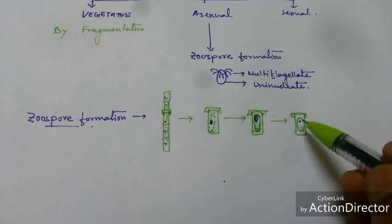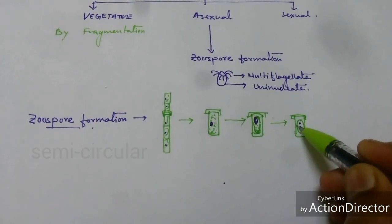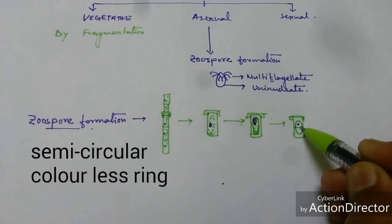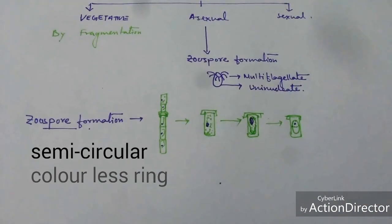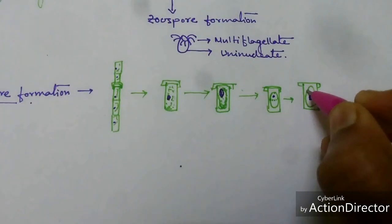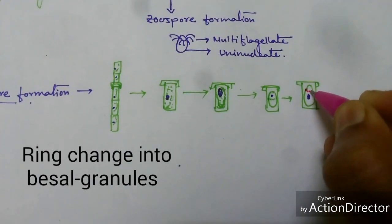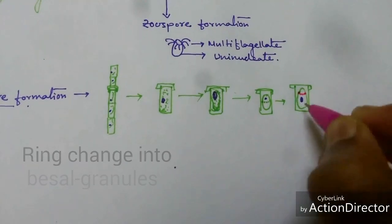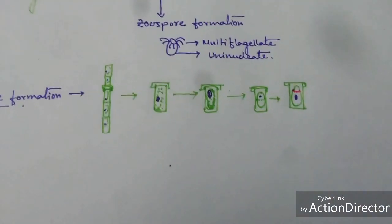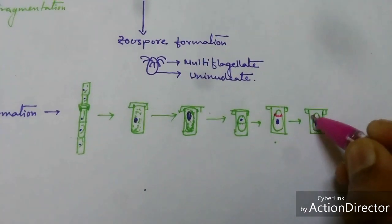Within this protoplasm a semicircular colorless ring is formed. This ring-like structure later forms into basal granules or blepharoplast, and each blepharoplast later transforms into a flagella.